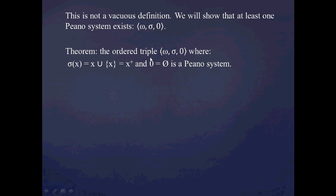So the theorem is going to be this ordered triple, where sigma of x is going to be the successor function we've already introduced — x+, which is x union the set containing x, as we've seen before — and zero is just going to be the empty set, the zero we're familiar with. We're going to say this ordered triple is a Peano system.